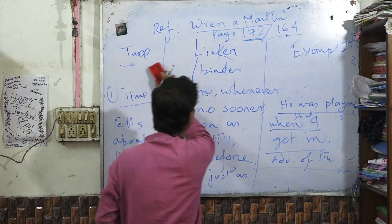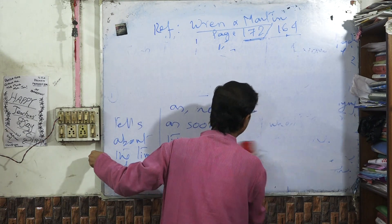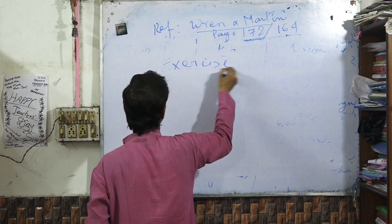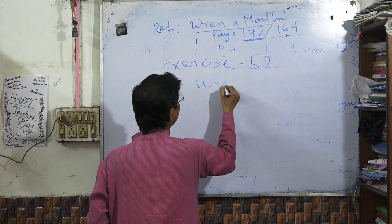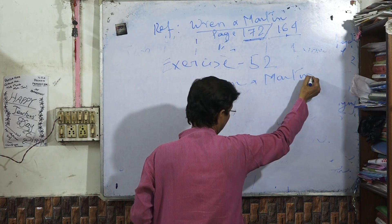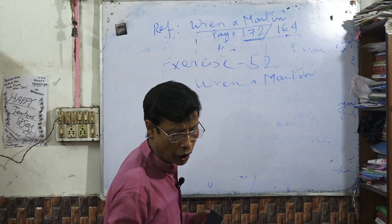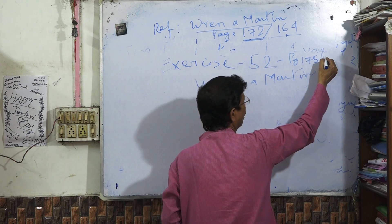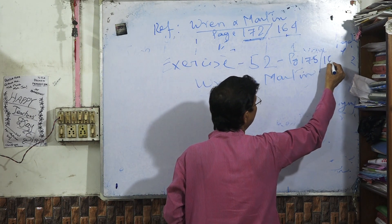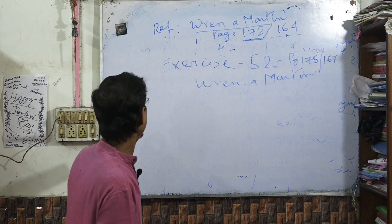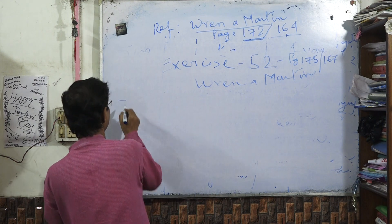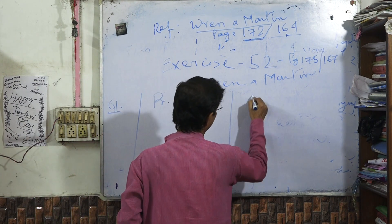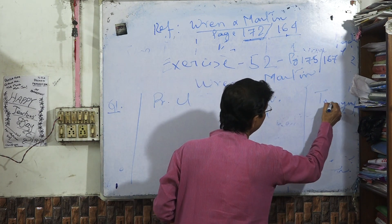We will do Exercise 52 from Wren and Martin — page 175 for the new edition, page 167 for the old edition. Make a table with three columns: question number, principal clause, adverbial clause, and type. We will first do the theory for these three table columns.